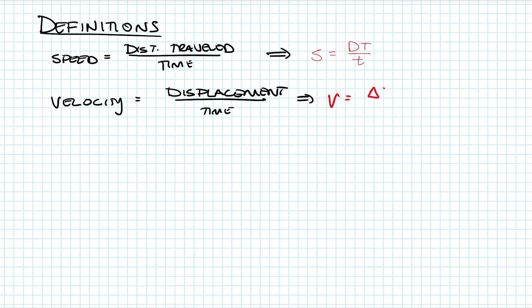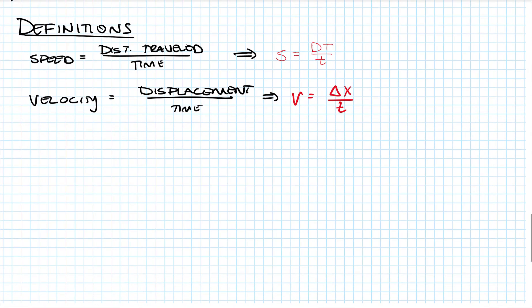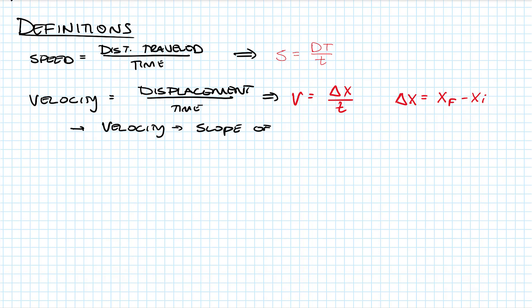The equation we get from that is that velocity equals displacement over time. When looking at displacement, we note that change in position is the final position minus the initial position. Another key definition is that velocity is the slope of a position versus time graph.